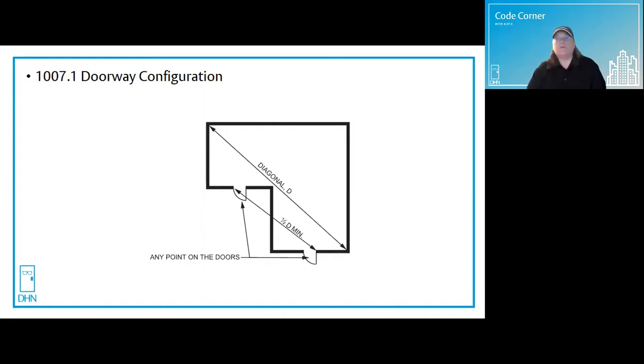Being an exceptional code, like the IBC, it allows the separation to be reduced to one-third the diagonal when the building is fully sprinklered.